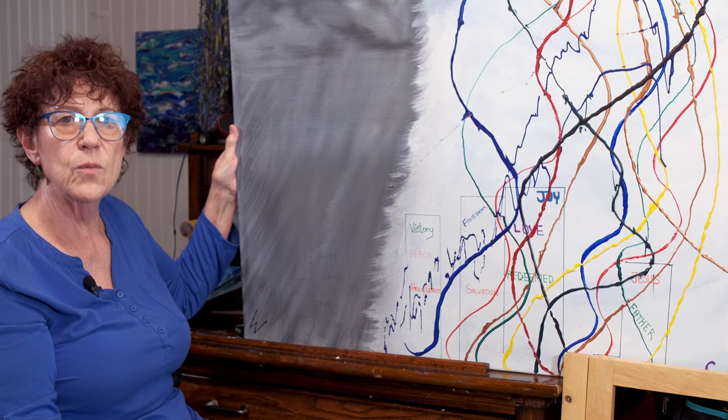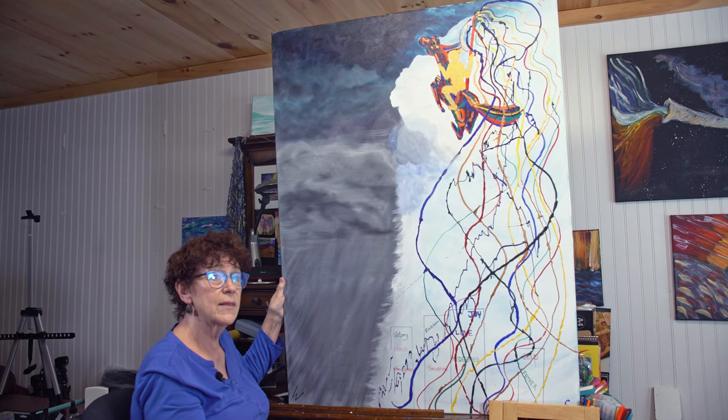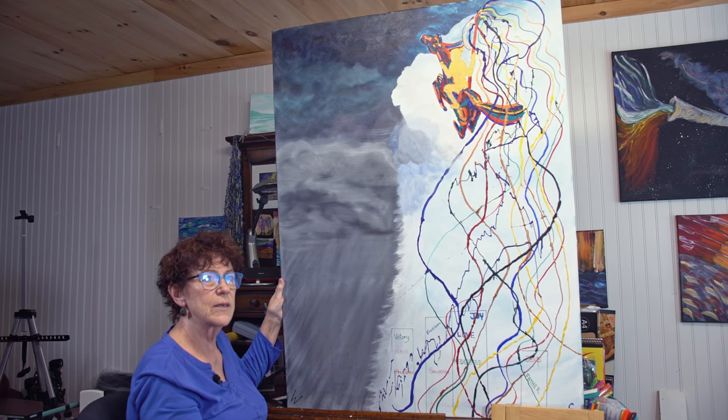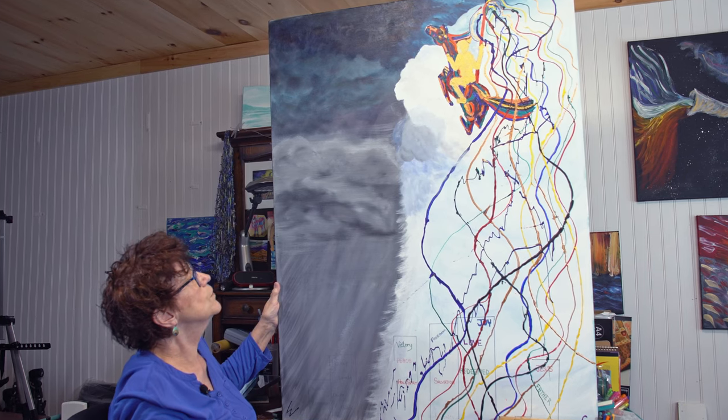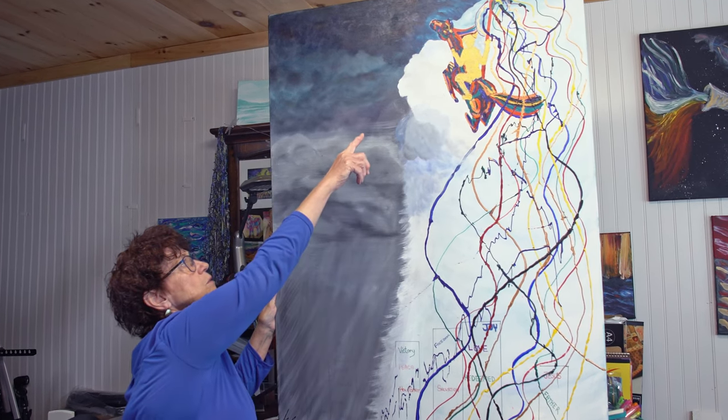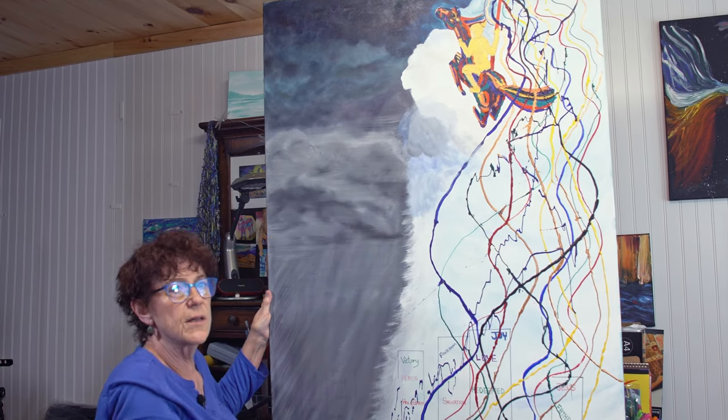The next day I shared the painting with the young lady that had given me the word, and she said, 'I have one question: did you put the lion of Judah in there, or did God do it?' I'm looking at the painting going, 'What lion of Judah?' And then I saw the muzzle and the forehead of the lion in front of the angelic rider.